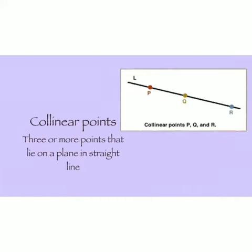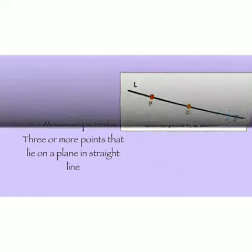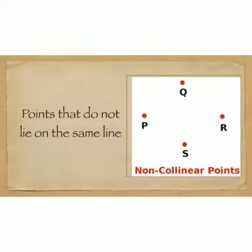What are collinear points? Three or more points that lie on a plane in a straight line are called collinear points. Points that do not lie on the same line are called non-collinear points.